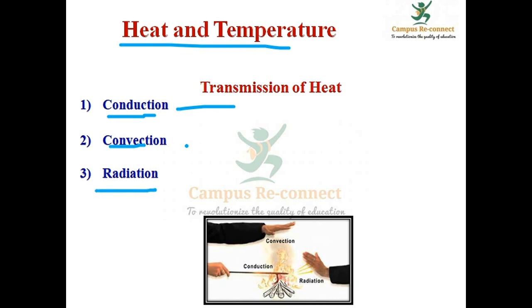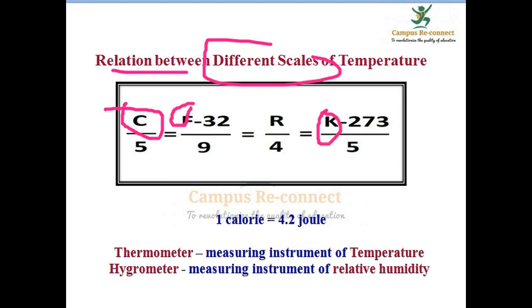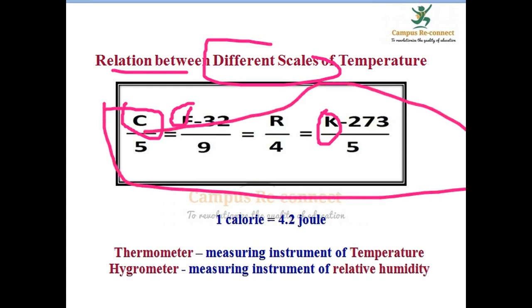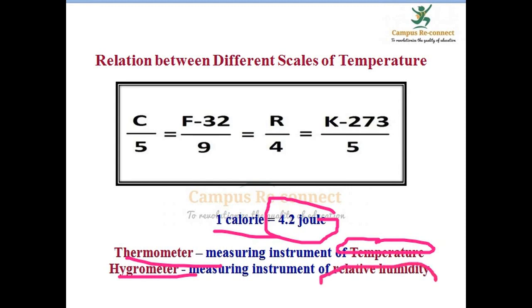This is a radiation example. In the relation between different scales and temperature, the temperature is equal to degree Celsius, Fahrenheit, or Kelvin. You can easily solve this table and solve problems. One calorie is equal to 4.2 joules. Thermometer measures temperature. Hygrometer measures relative humidity.